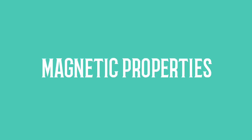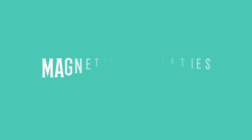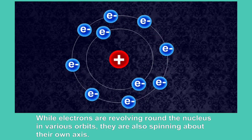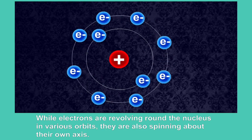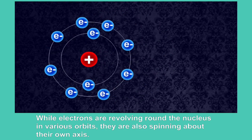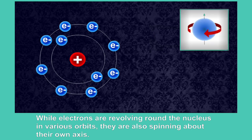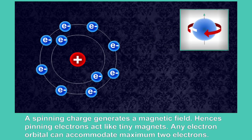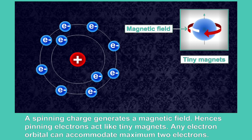Magnetic Properties. While electrons are revolving round the nucleus in various orbits, they are also spinning about their own axis. A spinning charge generates a magnetic field. Hence, spinning electrons act like tiny magnets. Any electron orbital can accommodate a maximum of two electrons.